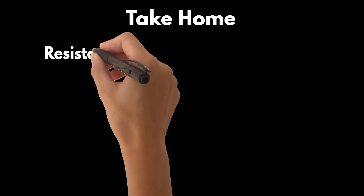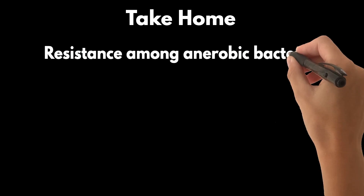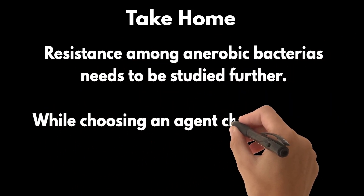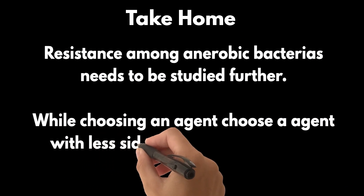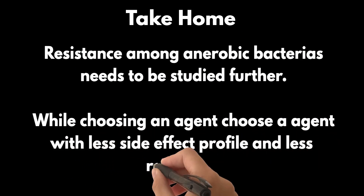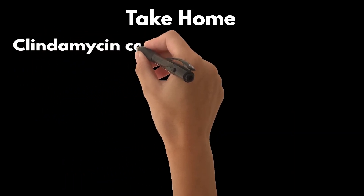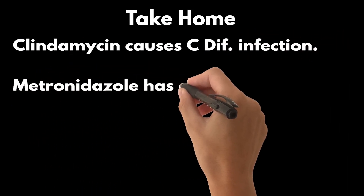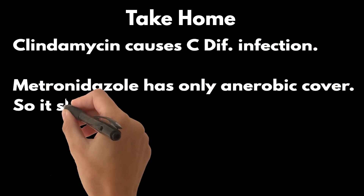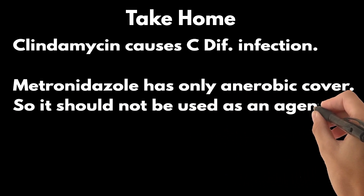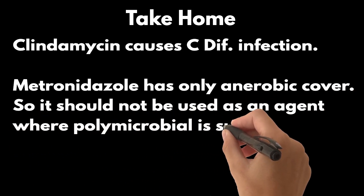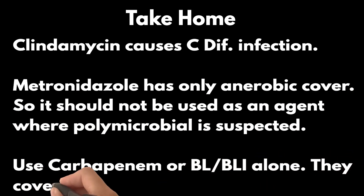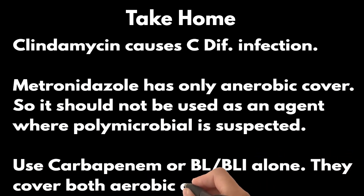The take-home message is: resistance among anaerobic bacteria needs to be studied further. When choosing an agent, choose one with a lesser side effect profile and less resistance. Clindamycin causes C. difficile infection. Metronidazole has only anaerobic cover, so it should not be used as an agent where polymicrobial infection is suspected. Use carbapenem or BL-BLI alone — they cover both aerobic and anaerobic organisms.